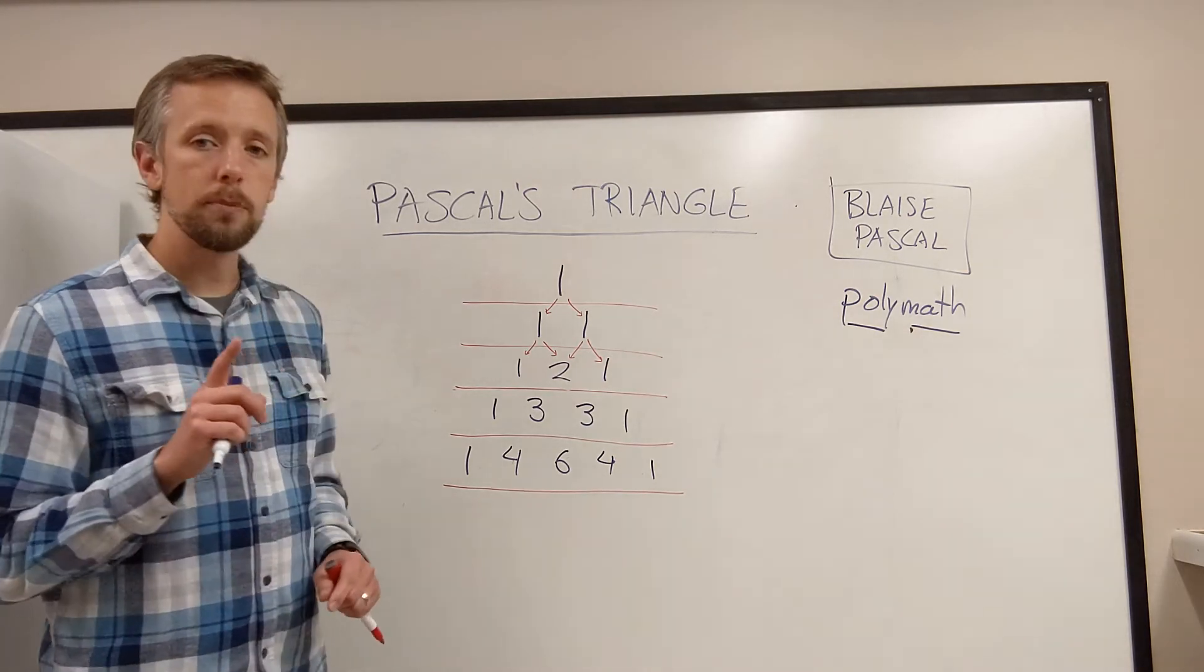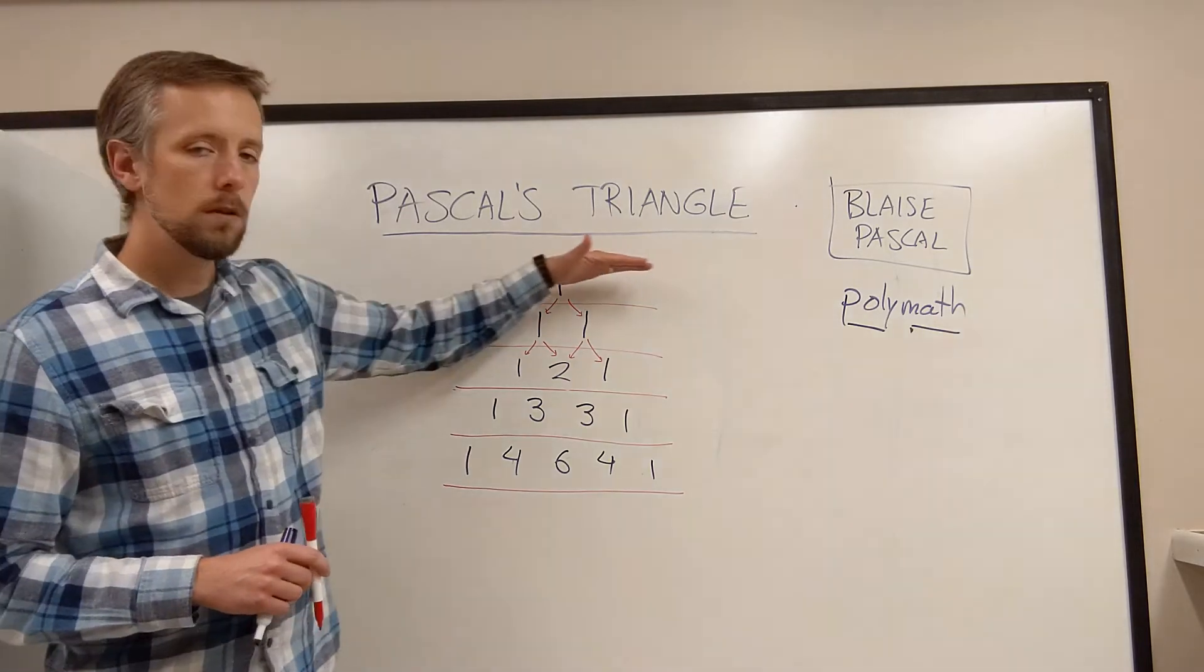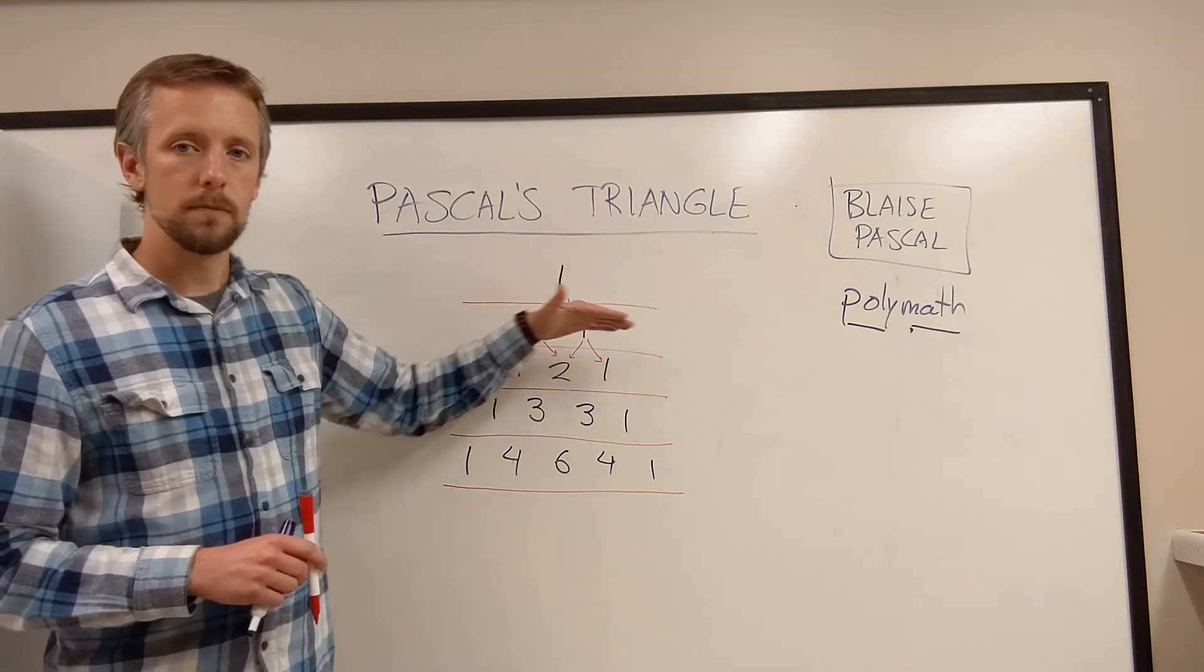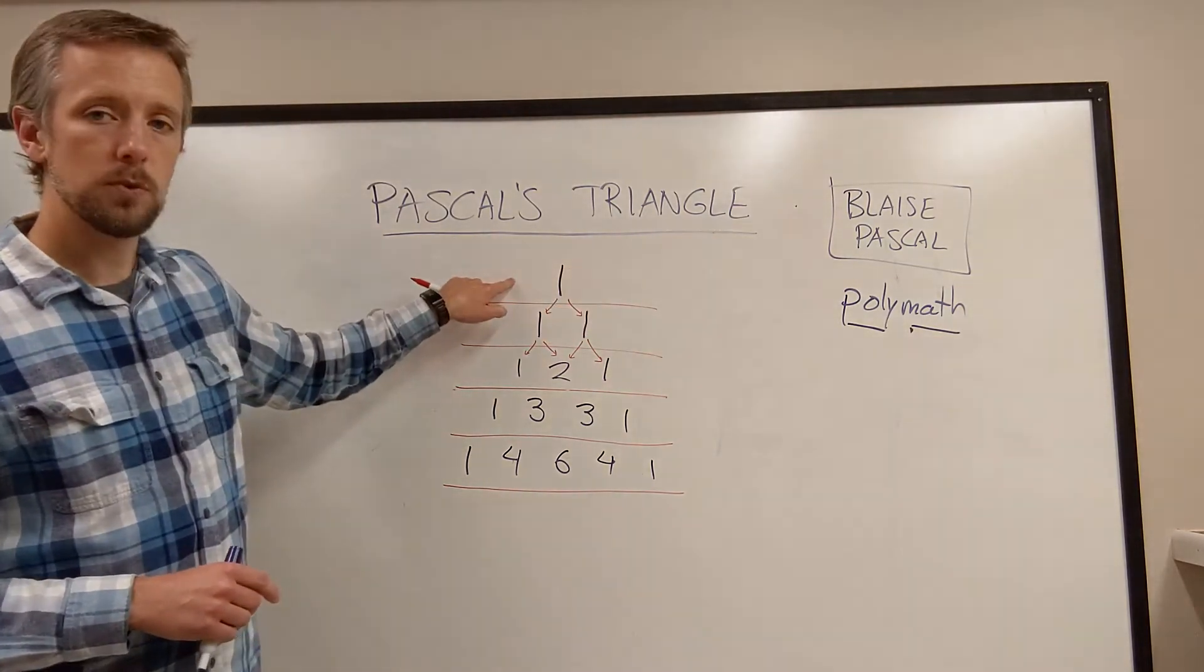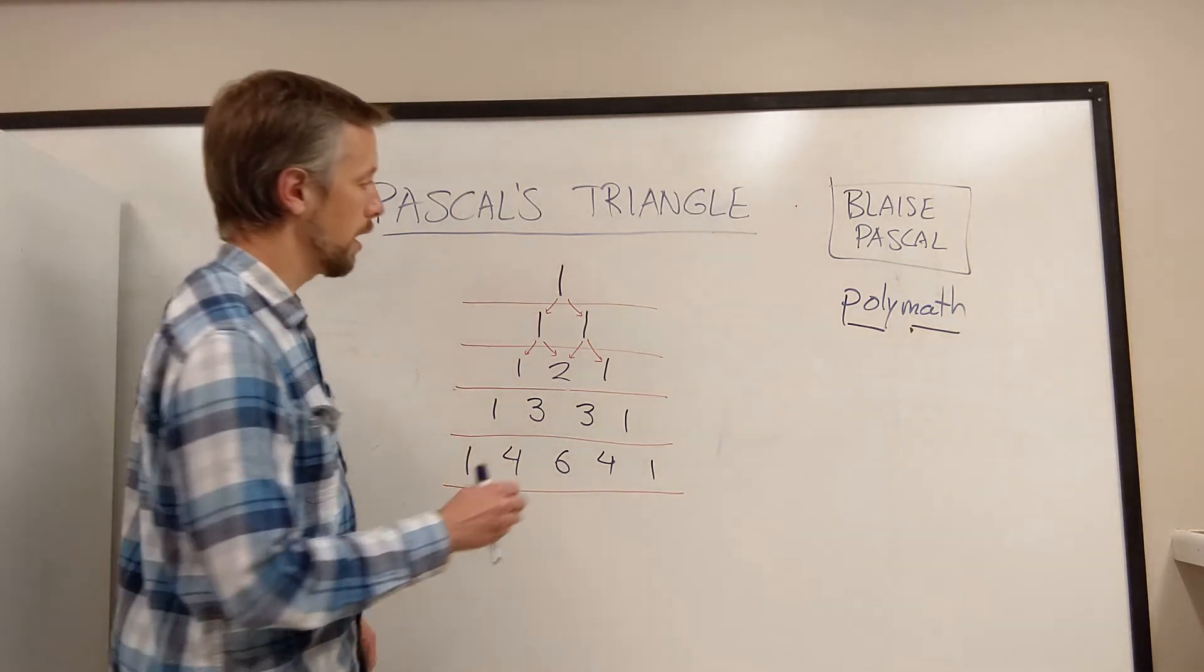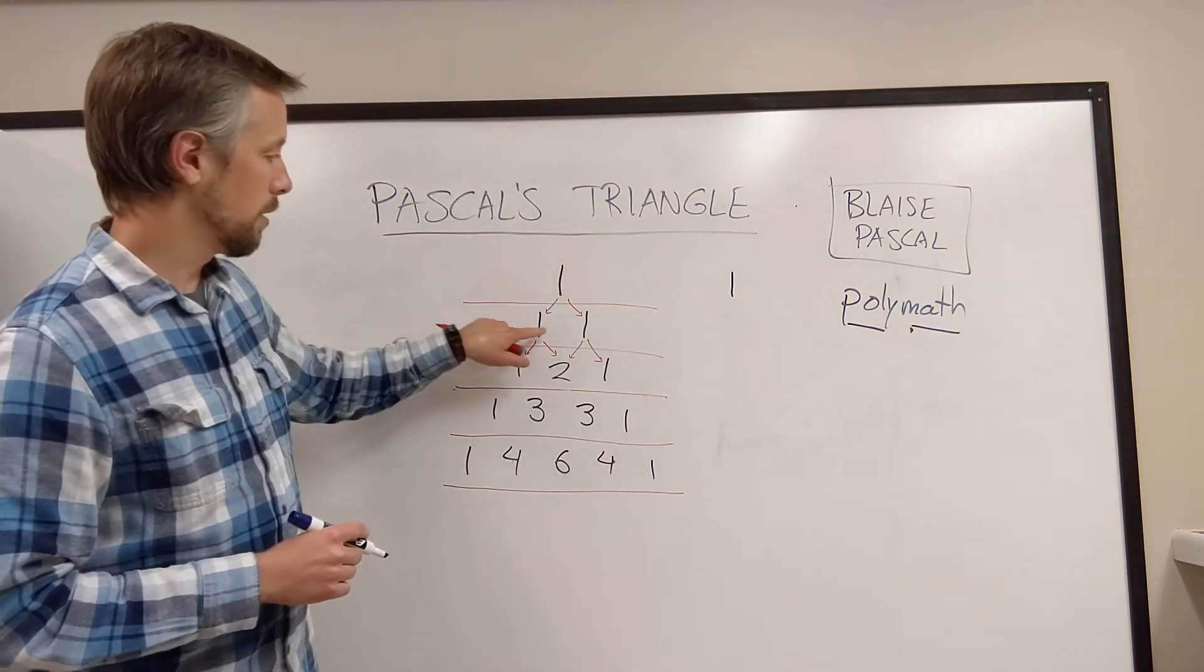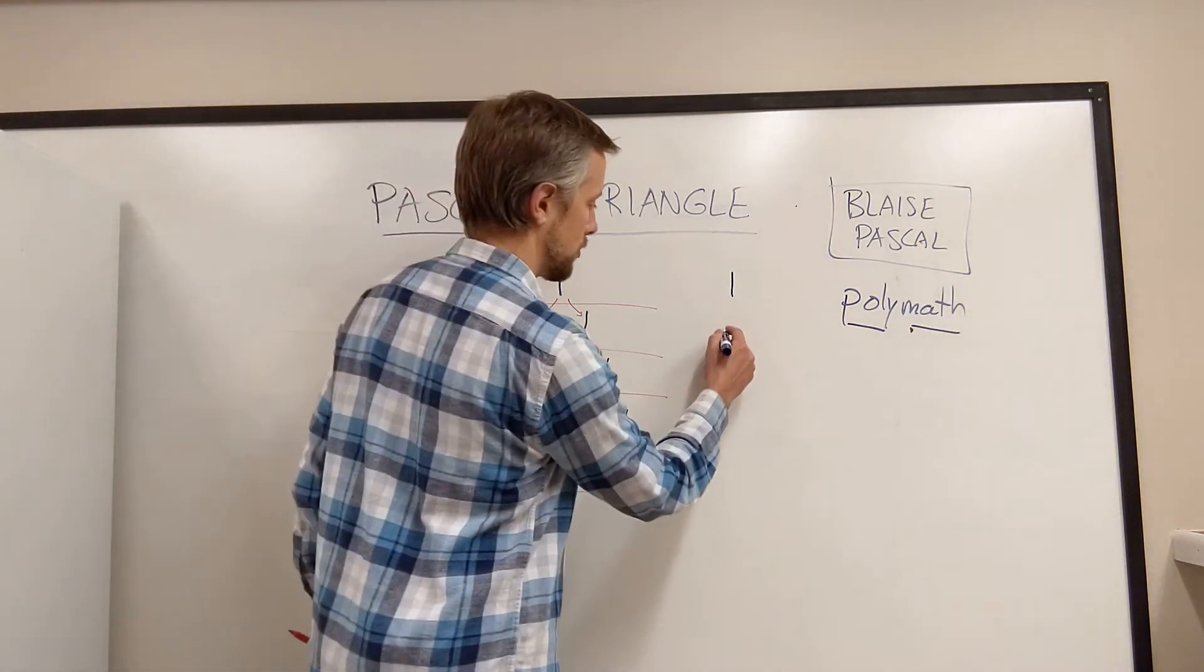Now, we're going to look at one particular pattern, which you get when you add all of the numbers within each row. So let's start in the first one. If we add, there's only a single number here. It's just a 1. So that would go here. Here, we have 1 plus 1. So the total is 2.